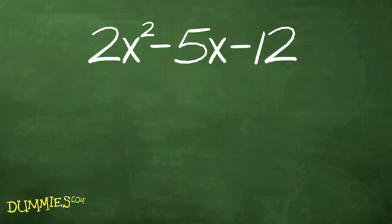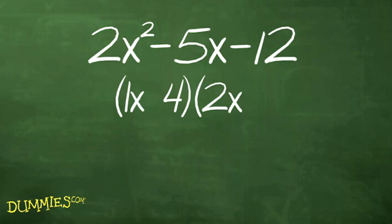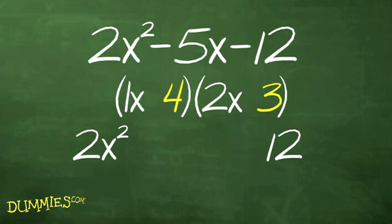The fourth step is to arrange your choices as binomials so the results are those you want. From the example, the following arrangement multiplies the 1x by the 2x to get the 2x² which is needed for the first product. Likewise, the 4 and 3 multiply to give you 12. The outer product is 3x and the inner product is 8x.